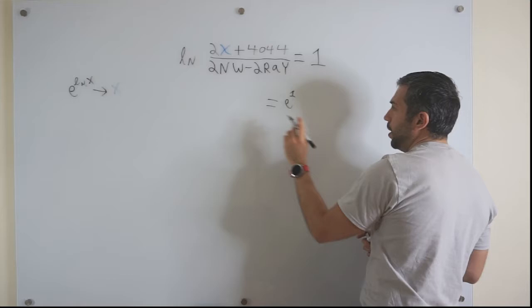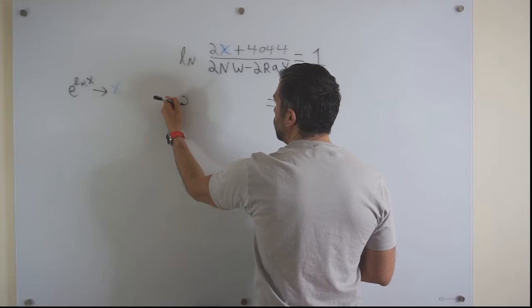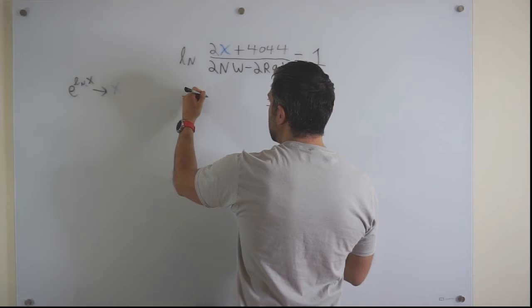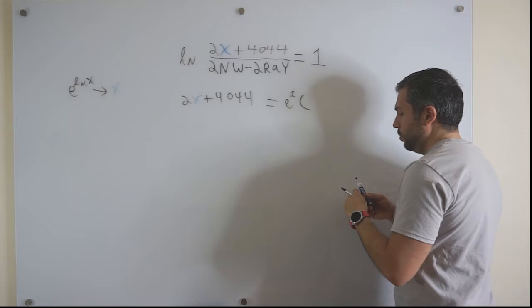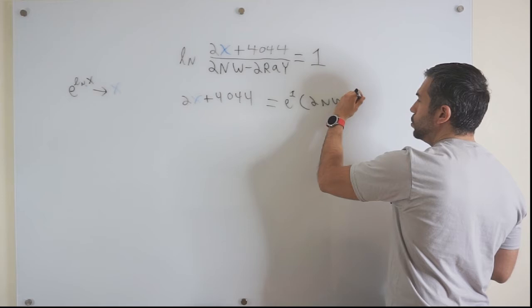So on the left, you will get 2x plus 4044. We're going to multiply all this to the right. We get e times 3nw minus e times 3ray.